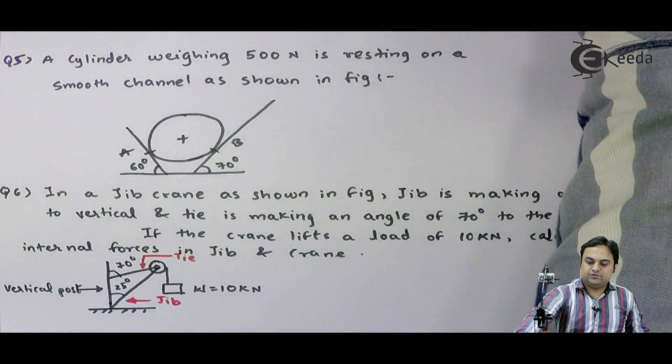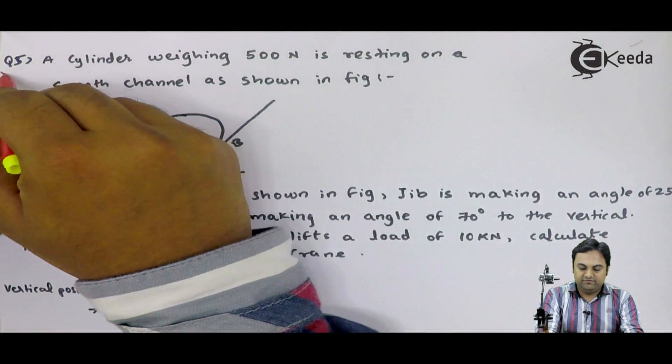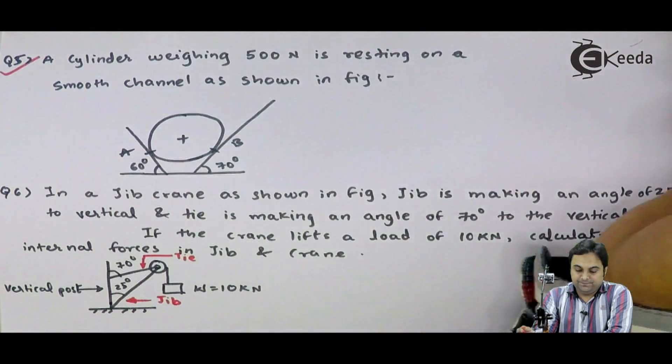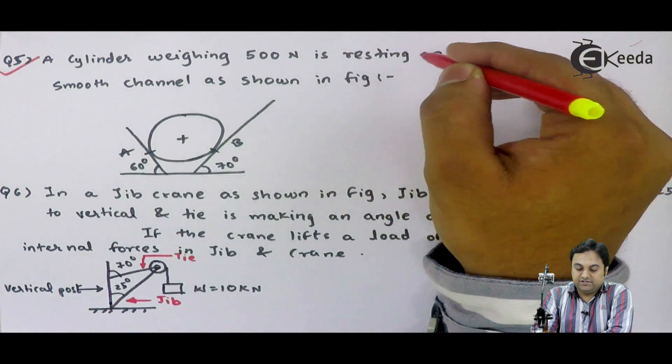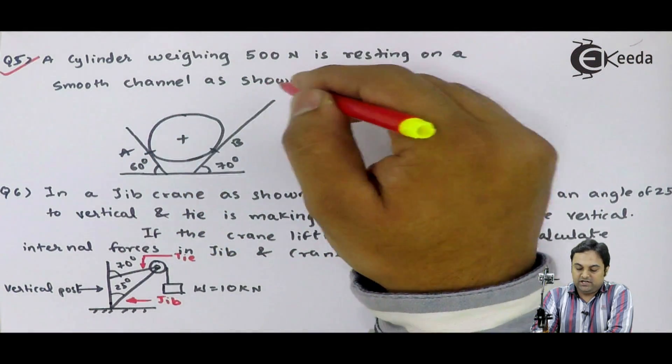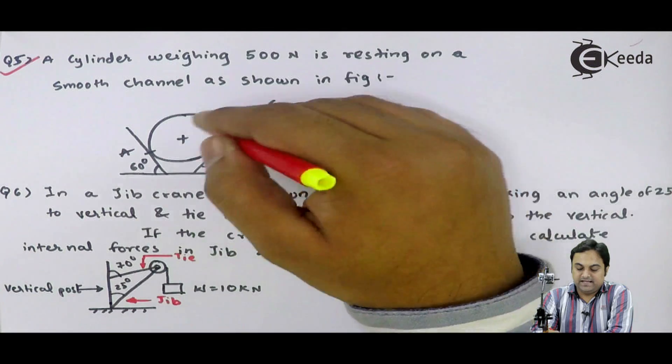Let us solve the next question, question number 5. I will read the question. A cylinder weighing 500 Newton is resting on a smooth channel as shown in figure. Diagram is given.